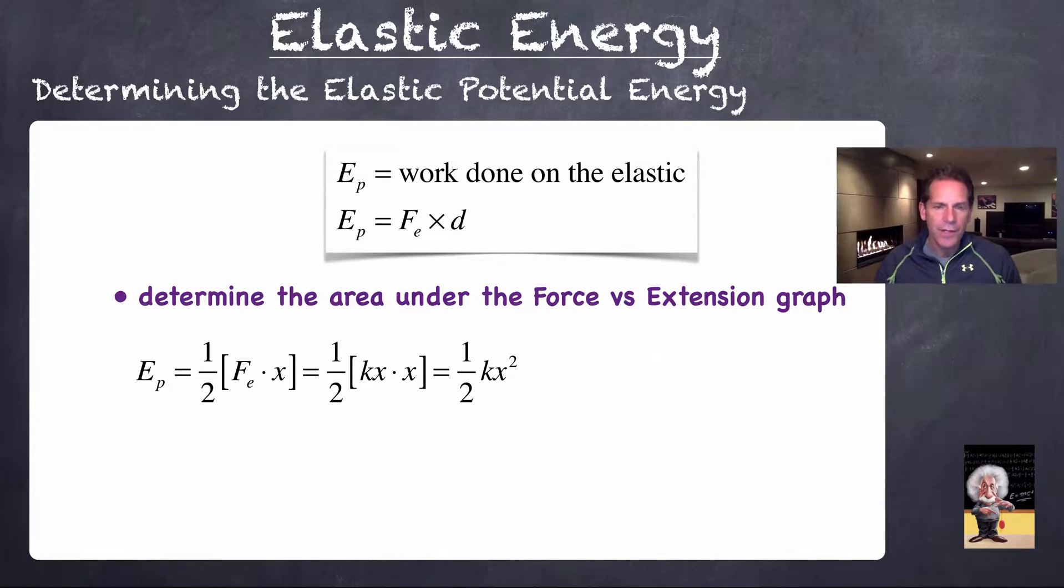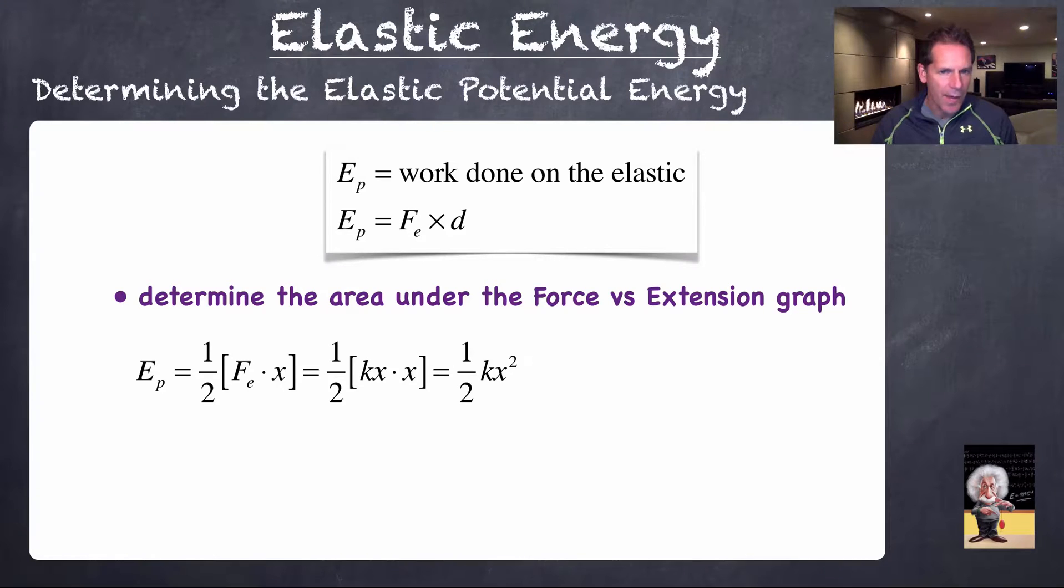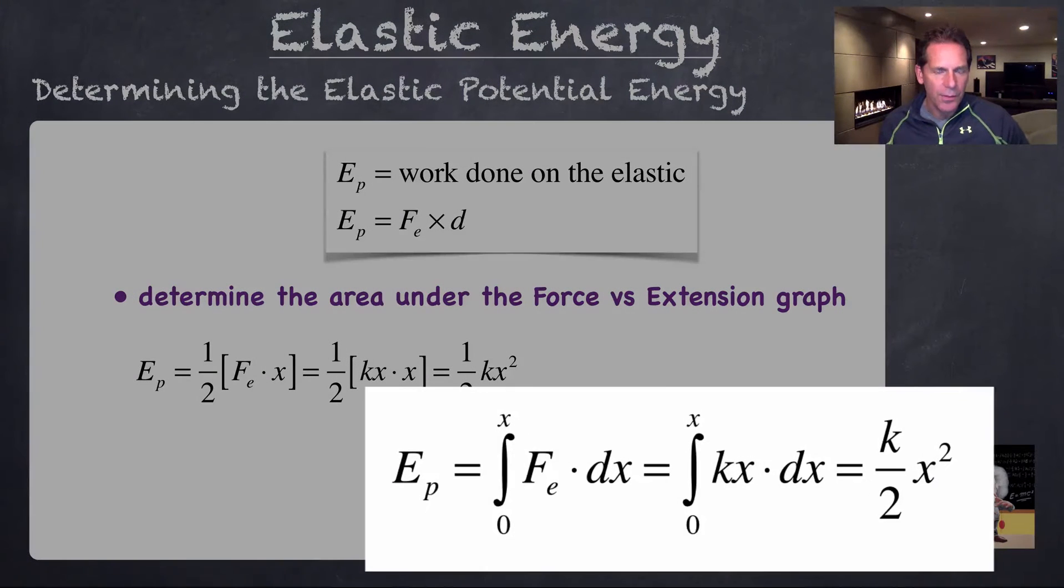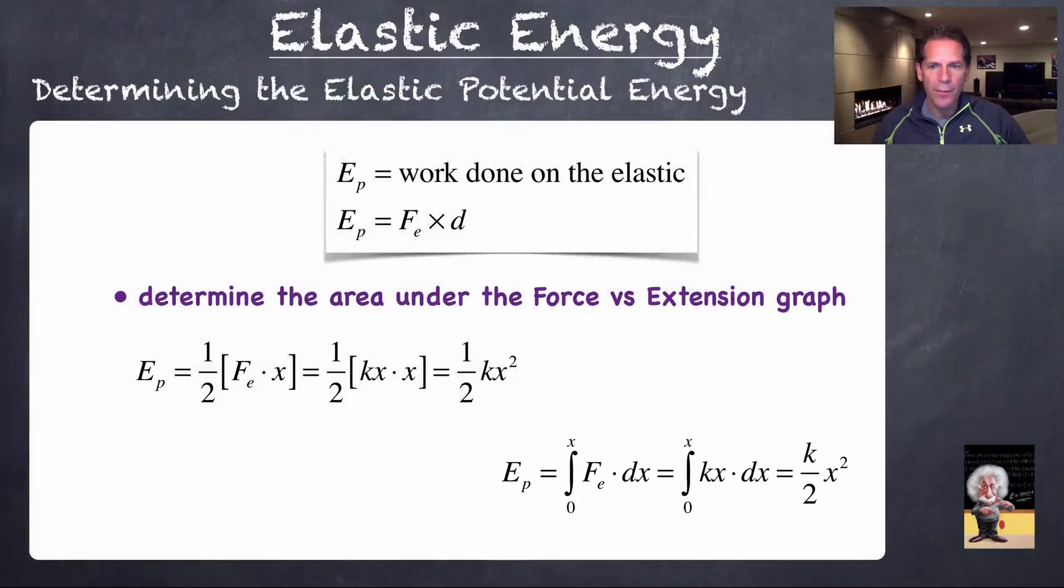For those of you who are taking calculus, we can derive this for any particular function, where we take the integral of the elastic force over the extension from zero to x. So those of you who follow the integral calculus, you can see that we end up with the same solution over here on the right hand side. K over 2x squared is the same as one half Kx squared. So the special case that we were looking at with the triangle turns out to work for all situations.